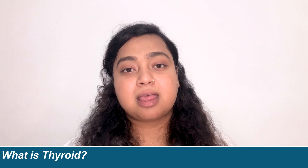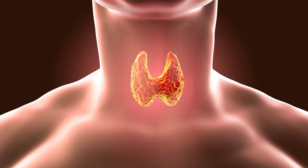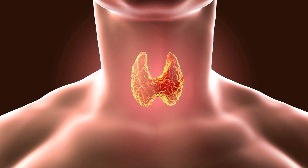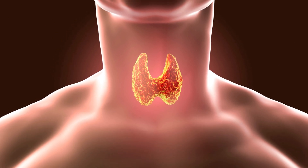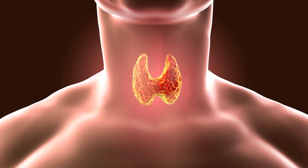Now, let us see what is the thyroid. A thyroid is a small butterfly-shaped gland present near your throat. You may use your two fingers to palpate your thyroid gland. Thyroid glands produce thyroid hormones, and it regulates the way your body uses energy.